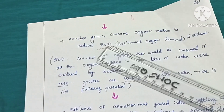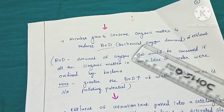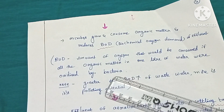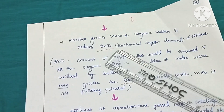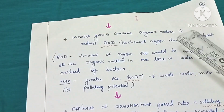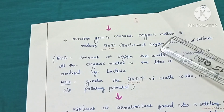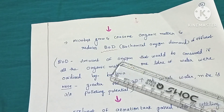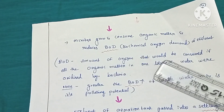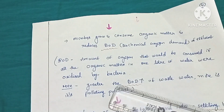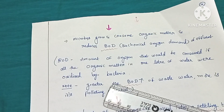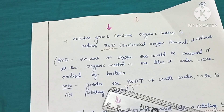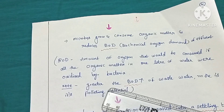These microorganisms grow by consuming the organic matter present in their vicinity, and this reduces the BOD — biological oxygen demand. BOD means the amount of oxygen that would be consumed if all organic matter in one litre of water were oxidized by bacteria. If the BOD level is high, that water is more polluted; if BOD is low, the water is less polluted.